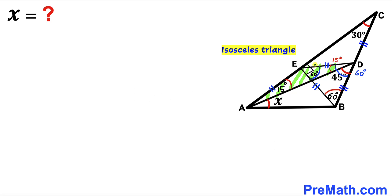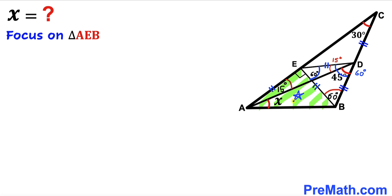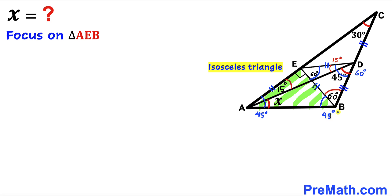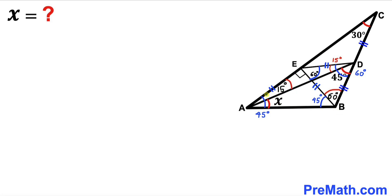Therefore, side ED equals side AE. Finally, let's focus on right triangle AEB. This is an isosceles triangle since AE equals EB, and the right angle is 90 degrees. Therefore, each of the two base angles must be 45 degrees. So we observe that the whole angle BAE is 45 degrees, which equals the sum of angle BAD (which is X) and angle DAE (which is 15 degrees).